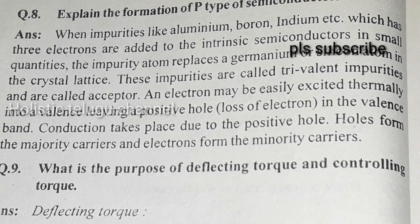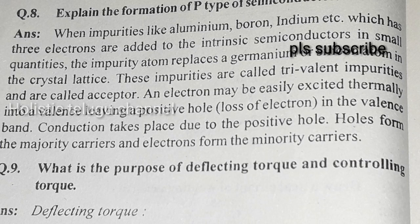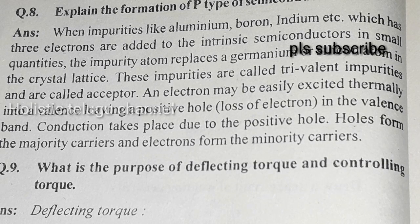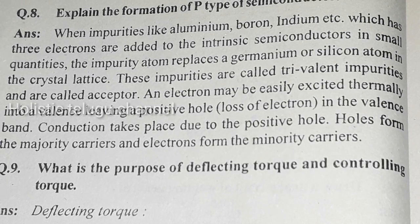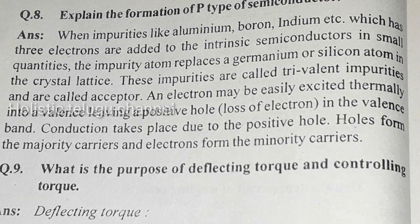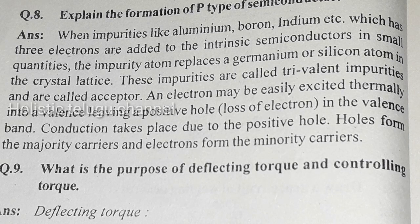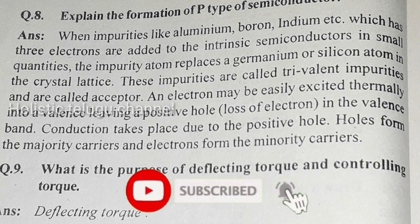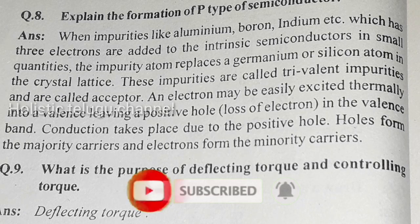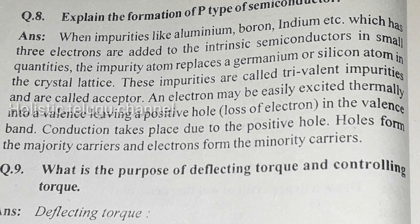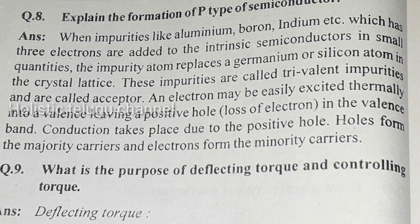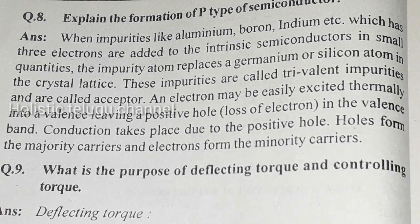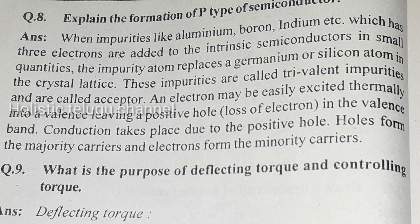Next question: explain the formation of P-type semiconductors. When impurities like aluminum, boron, or indium — which have three valence electrons — are added to an intrinsic semiconductor in small quantities, the impurity atoms replace germanium or silicon atoms in the crystal lattice. These impurities are called trivalent impurities and are called acceptors. An electron may be thermally excited into the valence band, leaving a positive hole. Conduction takes place due to these positive holes. Holes are the majority carriers and electrons are the minority carriers.